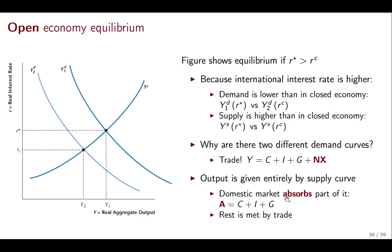The term 'absorption' turns out to be very important — it tells you how much of total output is absorbed by your own economy. Absorption can be positive or negative relative to output. If absorption is higher than output, you need to import; if absorption is lower than output, as is the case in this graph, then you're going to need to export — you're producing more than what you're absorbing in your domestic market. That is all we need to do to make our Chapter 11 model into an open economy. In our last video, we're going to take this model and look at different changes in the economy and how they affect the open economy model.